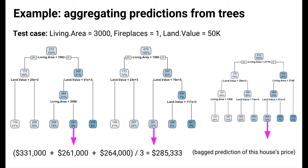Let's look at a regression example using housing data. I bootstrapped the training set three times and built three regression trees to predict house price. The test case is a house with a living area of 3,000 square feet, one fireplace, and a land value of $50,000. Following the branches, tree one predicts $331,000, tree two predicts $261,000, and tree three predicts $264,000. To get the bagged prediction, I average these three: approximately $285,000.